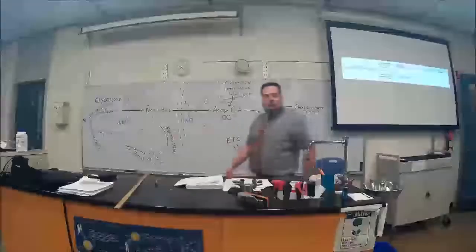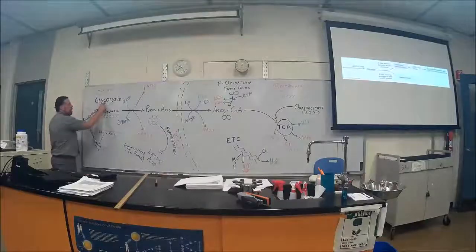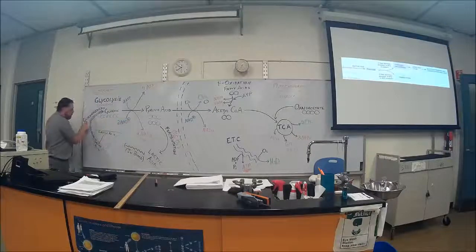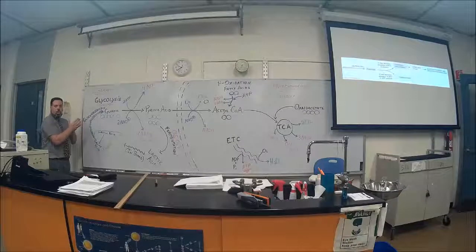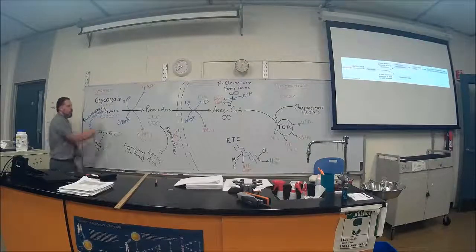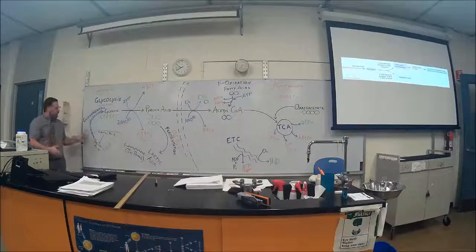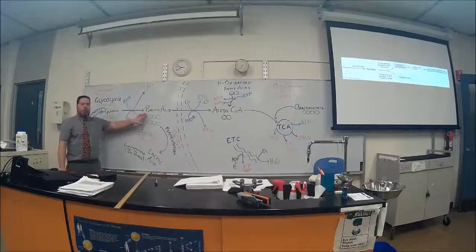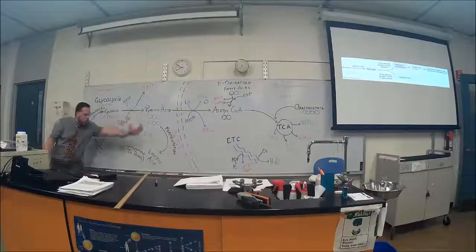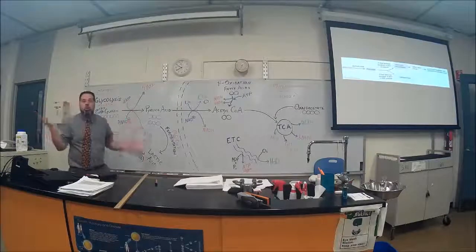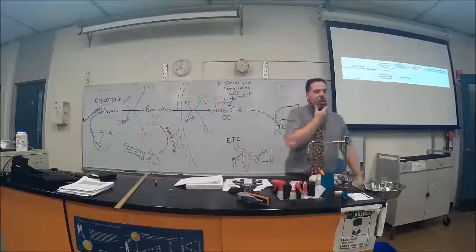Glycolysis is totally different from gluconeogenesis. Glycolysis takes glucose and breaks it into pyruvic acid. Gluconeogenesis takes pyruvic acid and makes it into glucose — the opposite. But the liver is the only place that can do that; this is not a reversible reaction, it has to go through different steps.